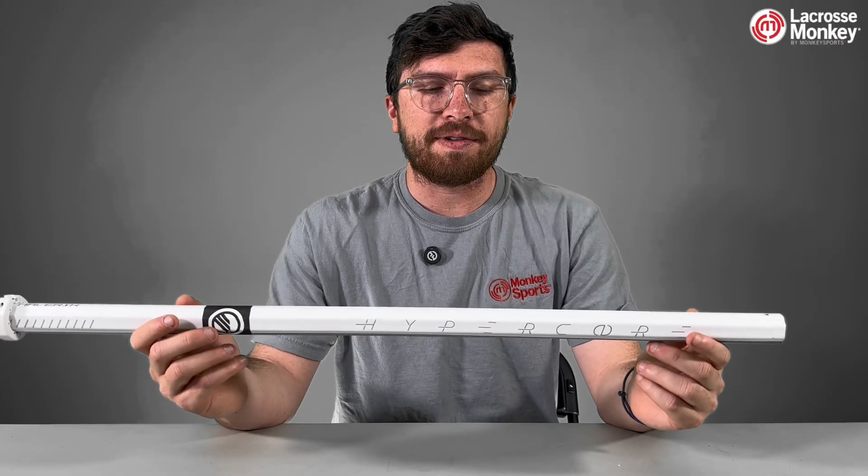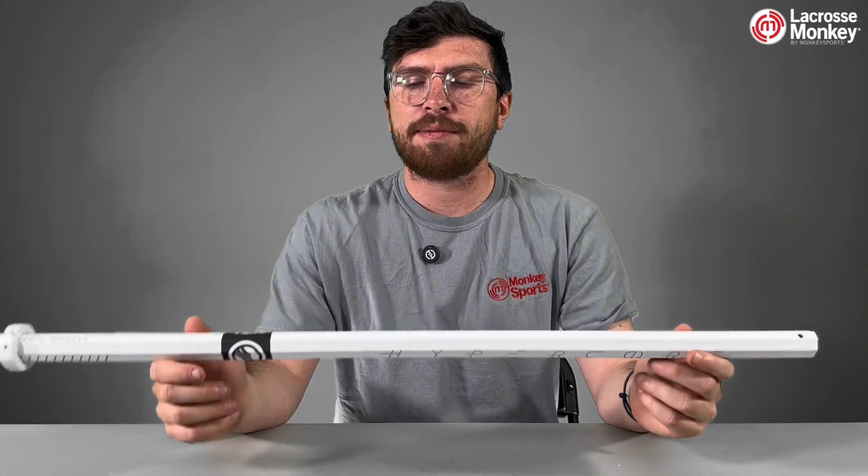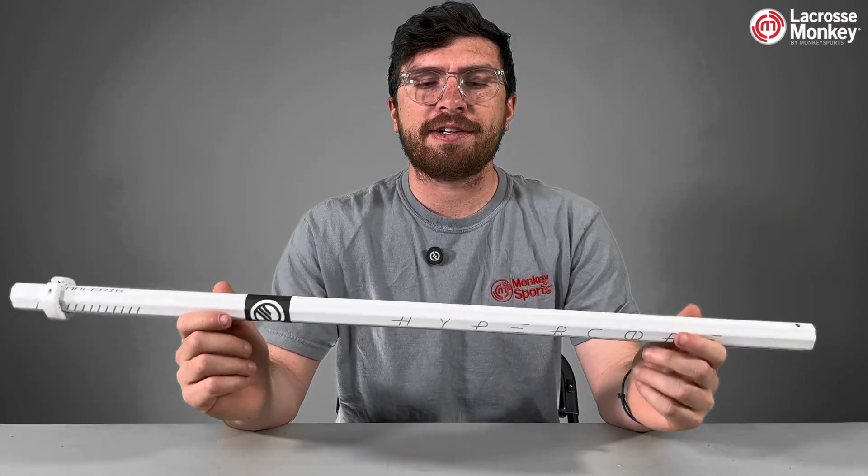The HyperCore is built for both ends of the field, so this is light enough to play offense, but durable enough to throw cross checks and stick checks.